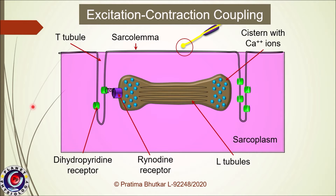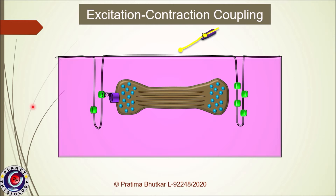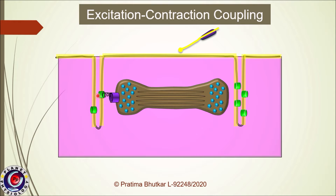Impulses in the motor nerve cross the neuromuscular junction and initiate an action potential in the muscle fiber. This action potential spreads along the sarcolemma as well as deep within the T-tubules. Depolarization of T-tubules is sensed by dihydropyridine receptors, which in turn activate ryanodine receptors and cause release of calcium from the cisterns into the sarcoplasm.